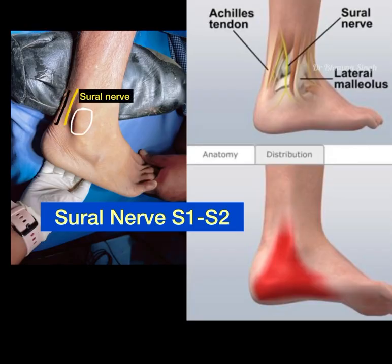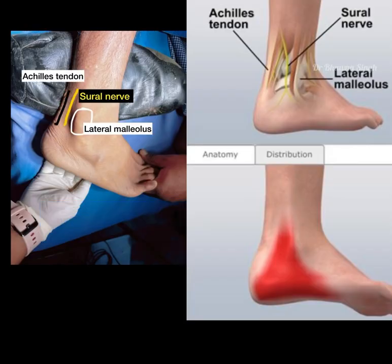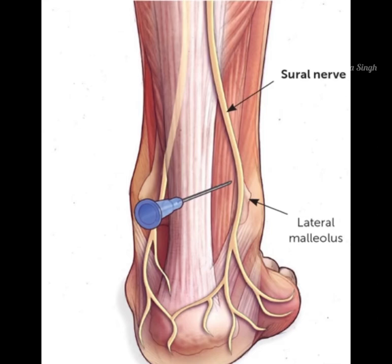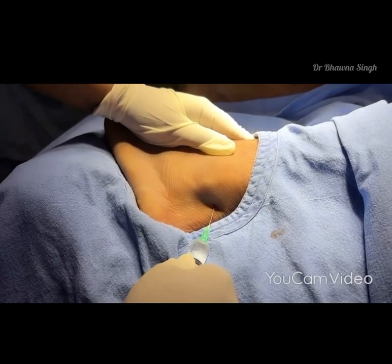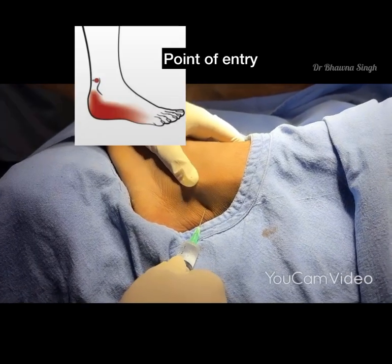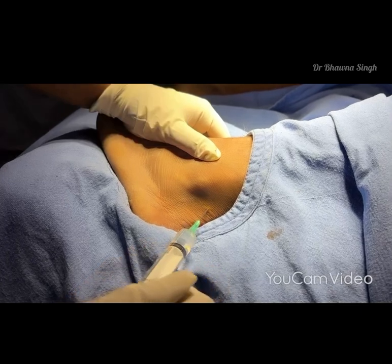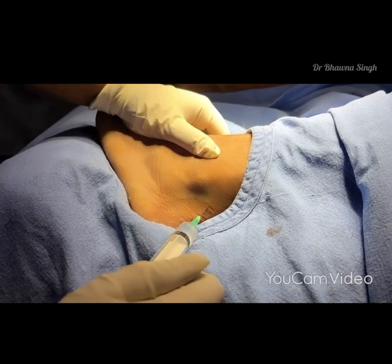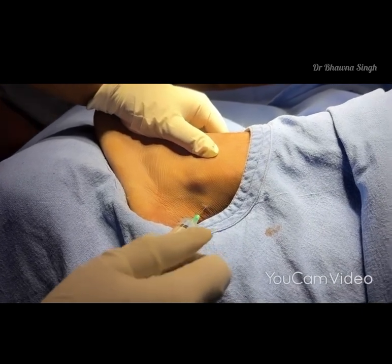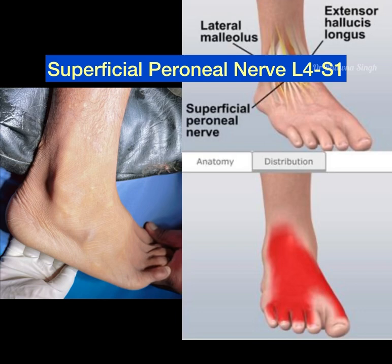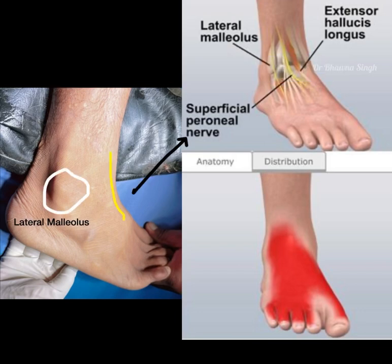The sural nerve is located in between the lateral malleolus and the Achilles tendon, and is blocked by injecting three to five milliliters of local anesthetic subcutaneously in a field-like distribution between the Achilles tendon and the lateral malleolus.